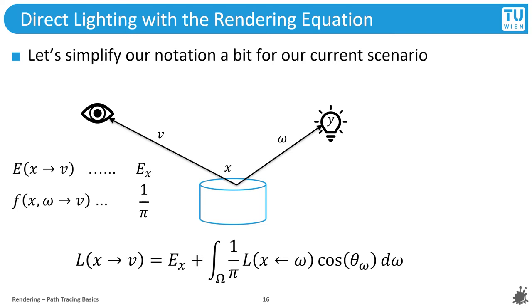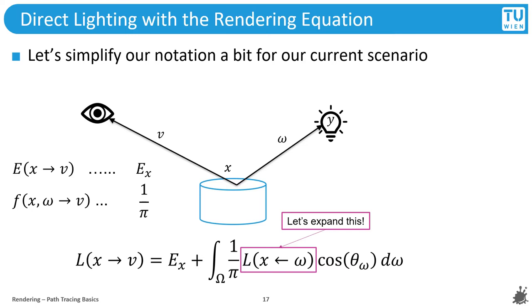To simplify notation — since we are only considering diffuse materials today — we use E(x) as a stand-in for light emitted by a point x, and we can replace the BRDF term with the constant 1/π to simulate a perfectly diffuse white material. We can already access most relevant factors in the equation: if we have information about our hit point x, we can find whether it emits any light; 1/π is a constant; and if we know the surface normal at x and the bounce direction omega, we can use basic trigonometry to find cos(θ).